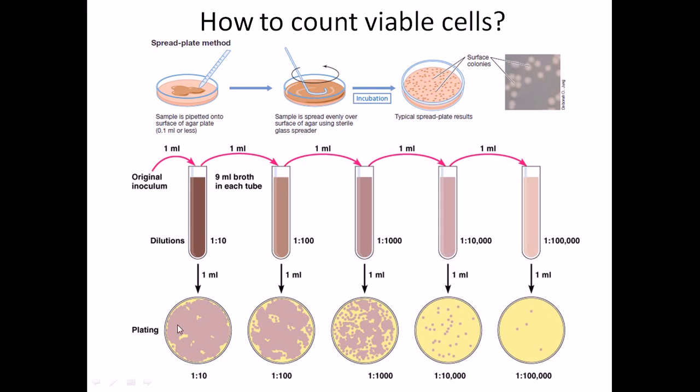But after that, once we make it more diluted, like 1 is to 10,000 or 1 lakh, we are going to see the colonies we can count on our own. Once we count the colonies, we can go back from this dilution factor and calculate the percentage or the amount of total bacteria present in our original inoculum sample. All of these three methods